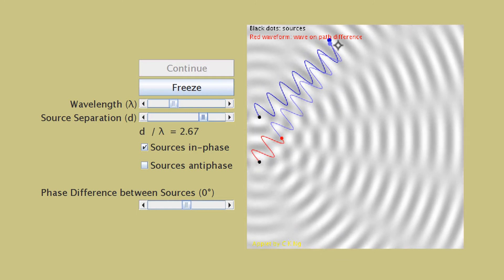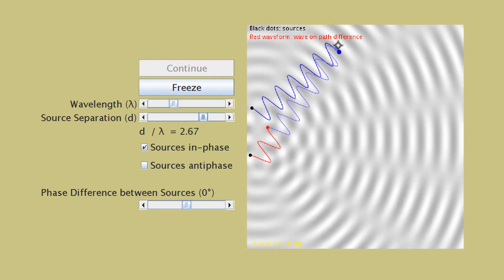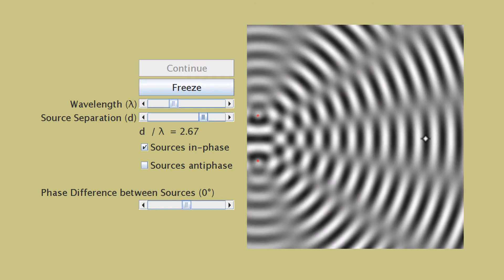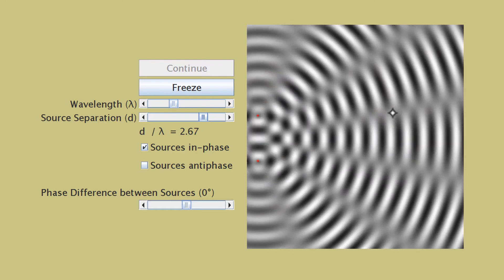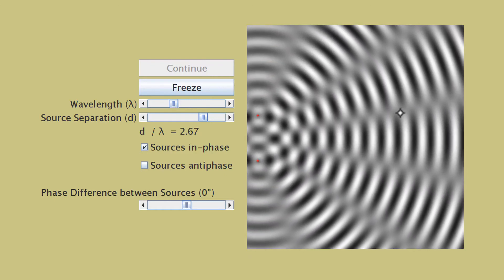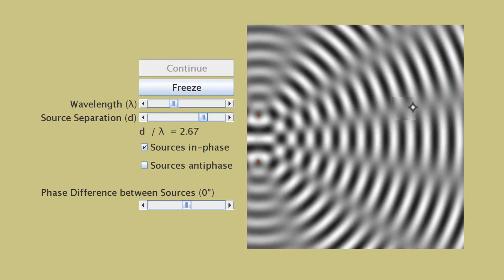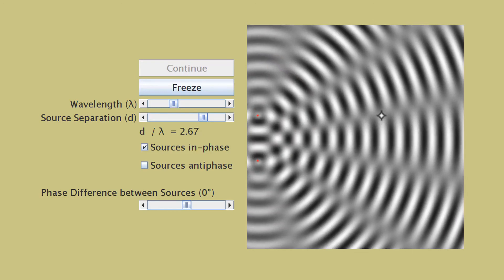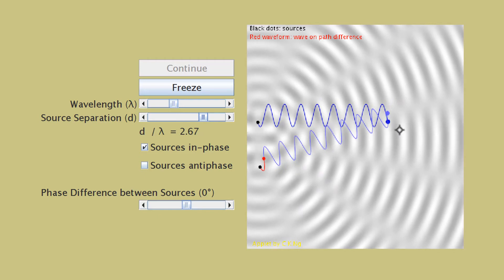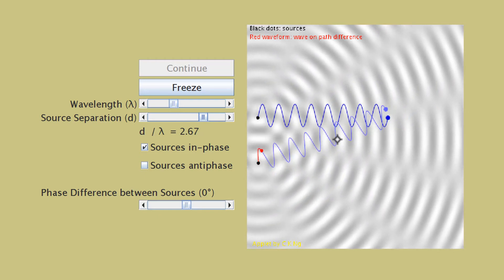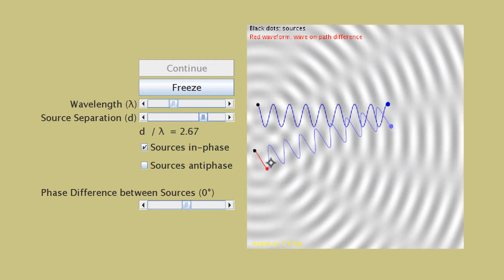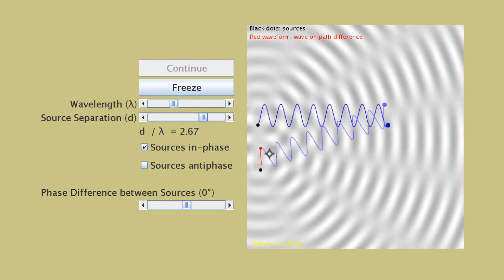So let's pick a point where we can see destructive interference. Where would it be? So somewhere here, right? I expect the path difference to be 0.5 along this line here. I mean 0.5 lambda. Yup. So this one, this length is half a lambda longer than this length.